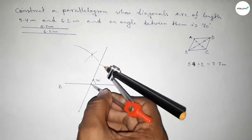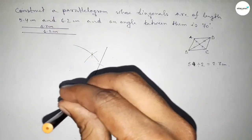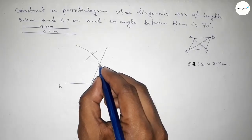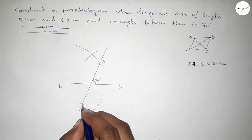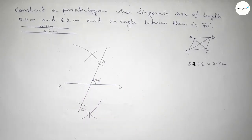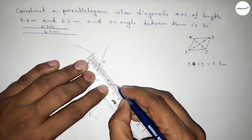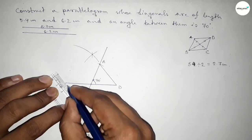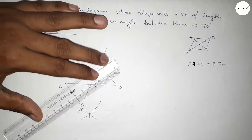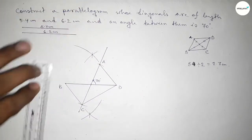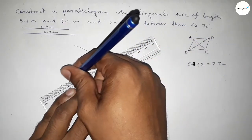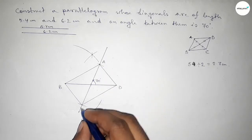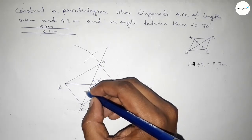Putting the compass at the midpoint, we cut points at 2.7 centimeters on both sides, taking those as point A and point C. Now joining A to D, then B to C, then the remaining sides — joining A to B — and we've completed the parallelogram.